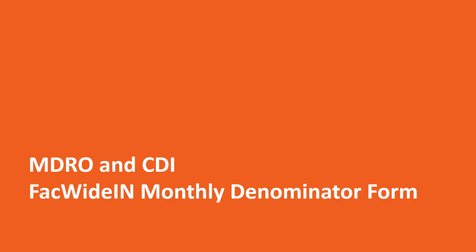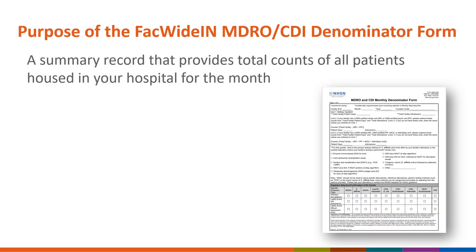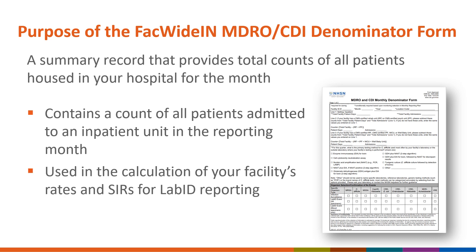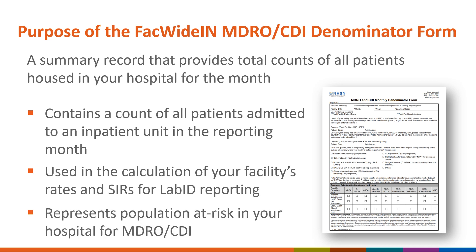We will start by providing a brief overview of the purpose and use of this monthly denominator form. The denominator form is a summary record in which total counts of patient days and admissions are entered into NHSN on a monthly basis. The summary record contains a count of all patients admitted to any inpatient unit in your healthcare facility throughout the reporting month. This denominator information is used to help generate your facility's rates and SIRs for LabID reporting and represents the total population in your facility who is at risk of acquiring an MDRO.